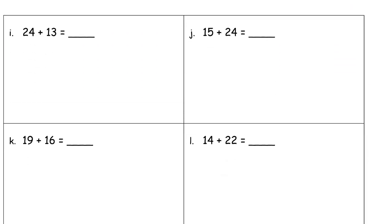It's more of the same on the second page. 24 plus 13. Let's make this 10 and 3. 24 plus 10 is 34, 34 plus 3 is 37.